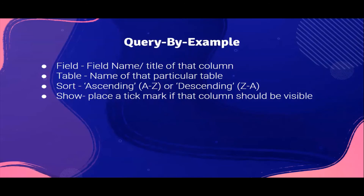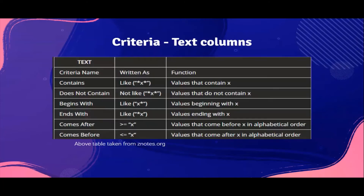The next row will say show and it will have a small box. If you want that particular column or field to be visible, you need to place a tick mark in that box. Next, we have criteria — the last row. After criteria, there is OR, so we can write criteria for two columns, meaning it should be either this or that. For criteria with a text field, there are some possible things you could be asked to do — pause the video to check those out.